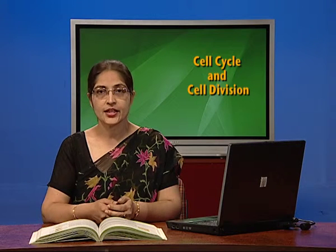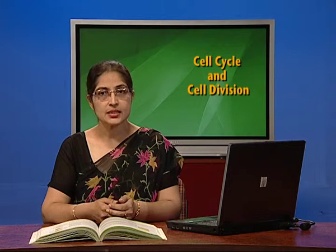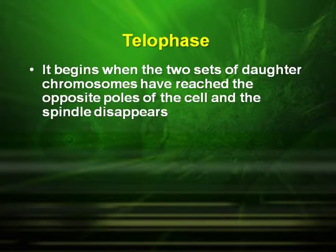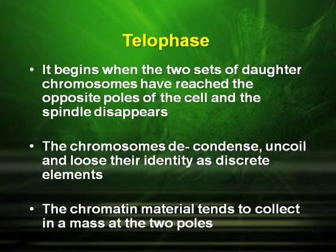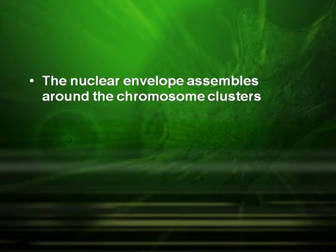The next stage, telophase, begins when the two sets of daughter chromosomes have reached the opposite poles of the cell and the spindle disappears. The chromosomes decondense, uncoil and lose their identity as discrete elements. The chromatin material tends to collect in a mass at the two poles. The nuclear envelope assembles around the chromosome clusters.